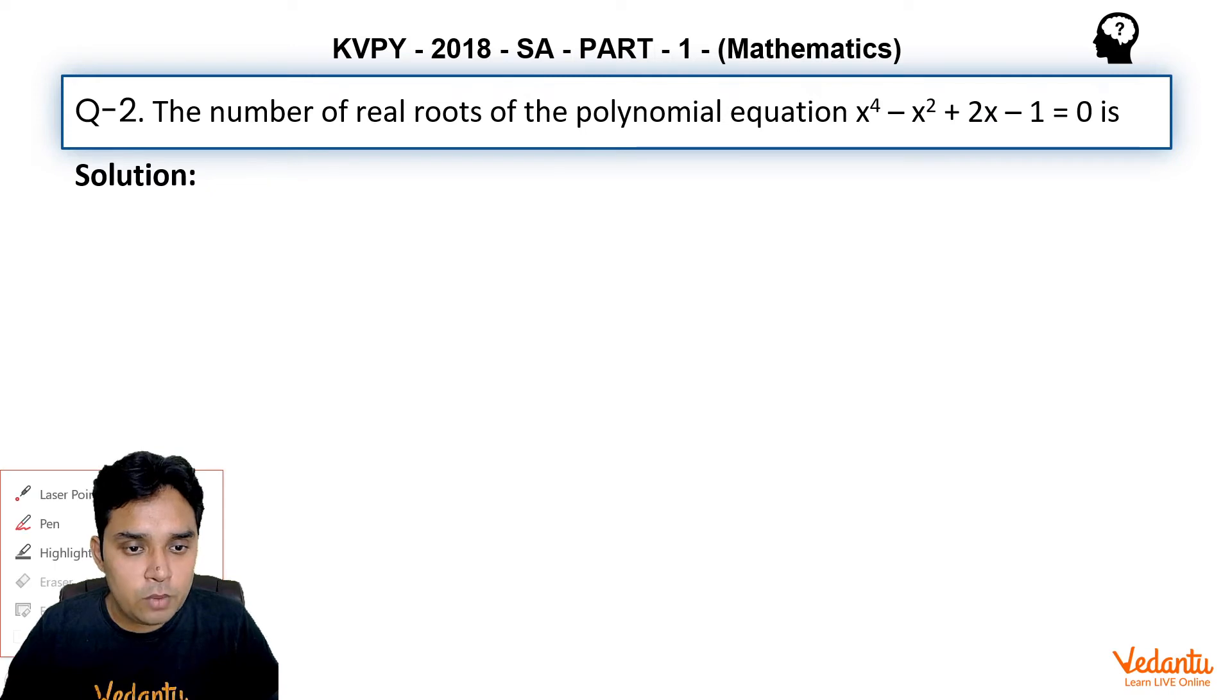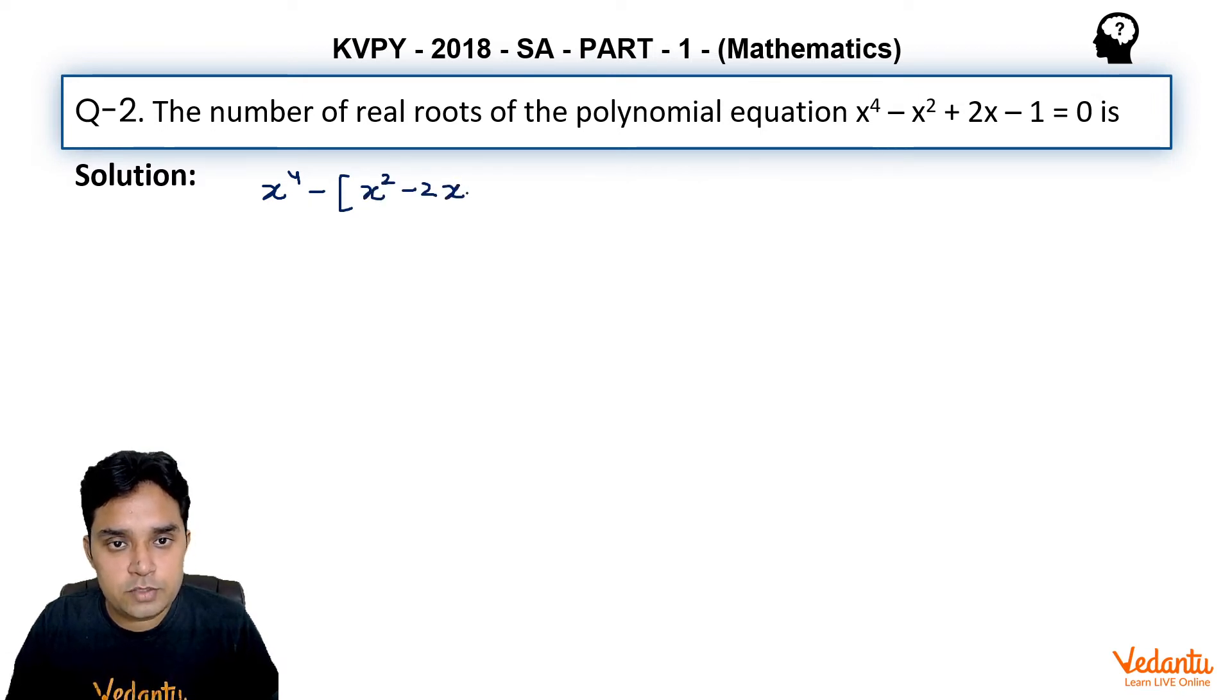...which are now x^2 - 2x + 1 = 0, so we can see this becomes, this bracket becomes (x - 1)^2 and this is equal to 0. So we can now factorize it using a^2 - b^2 identity.